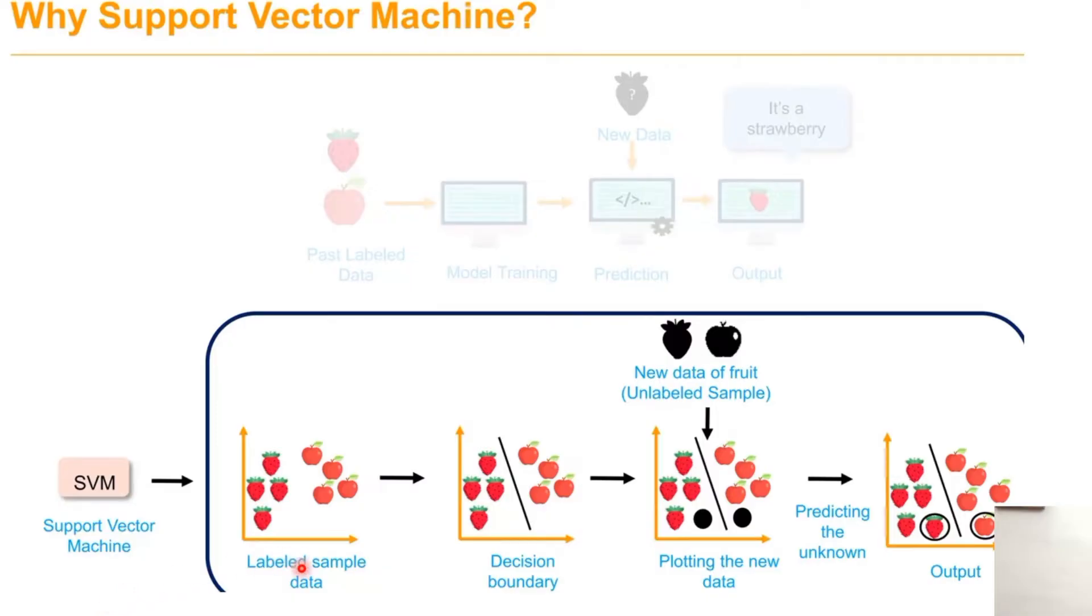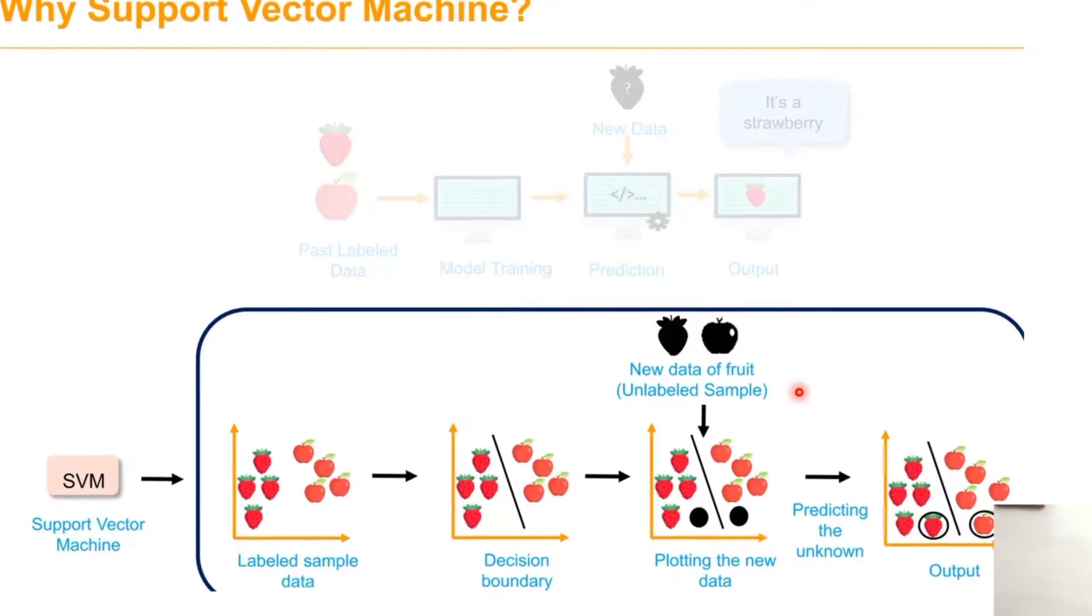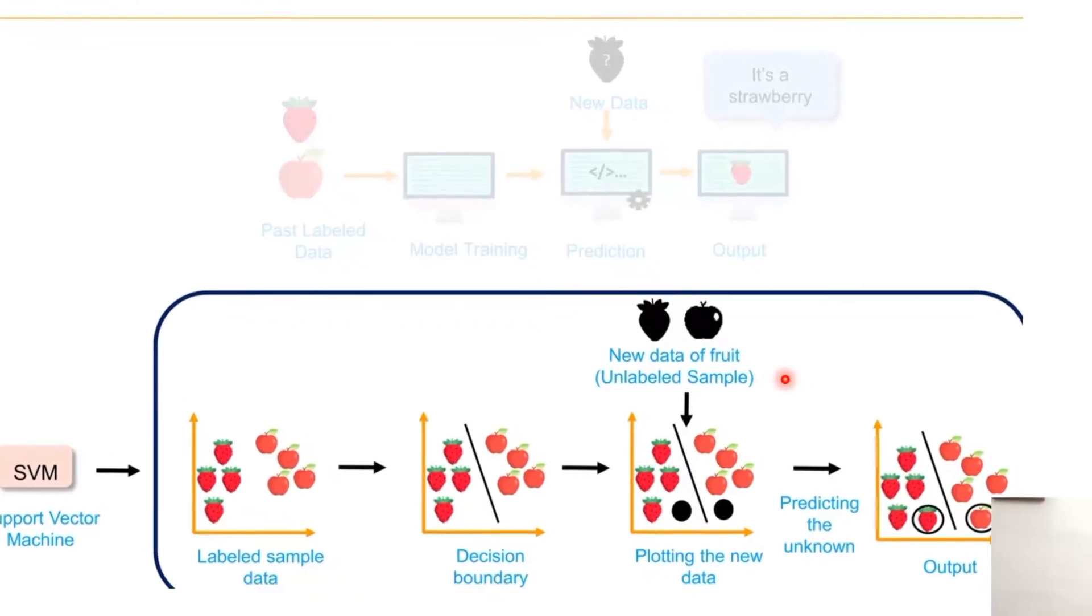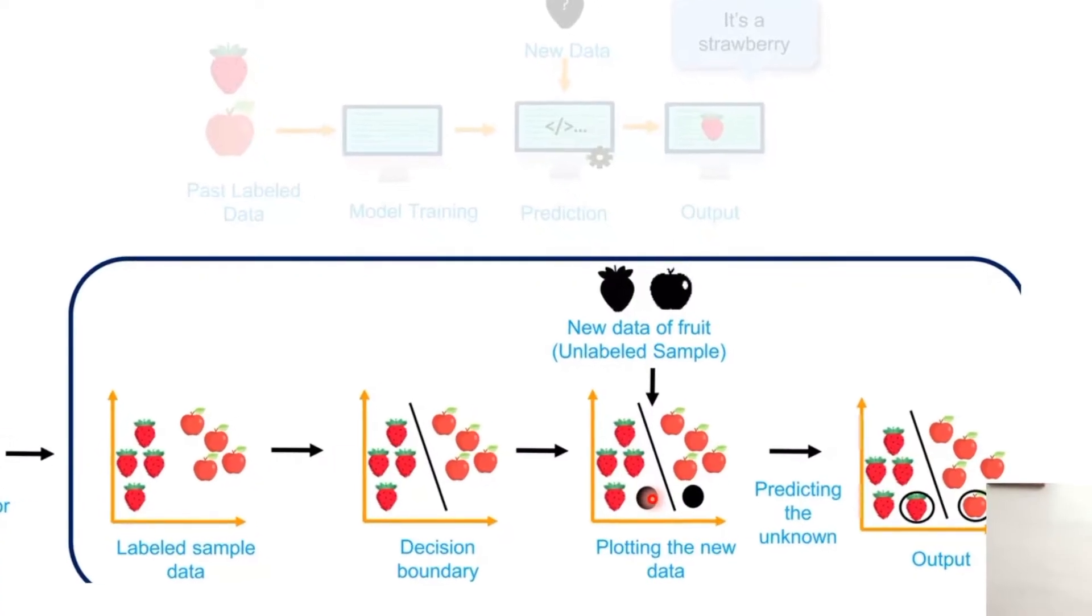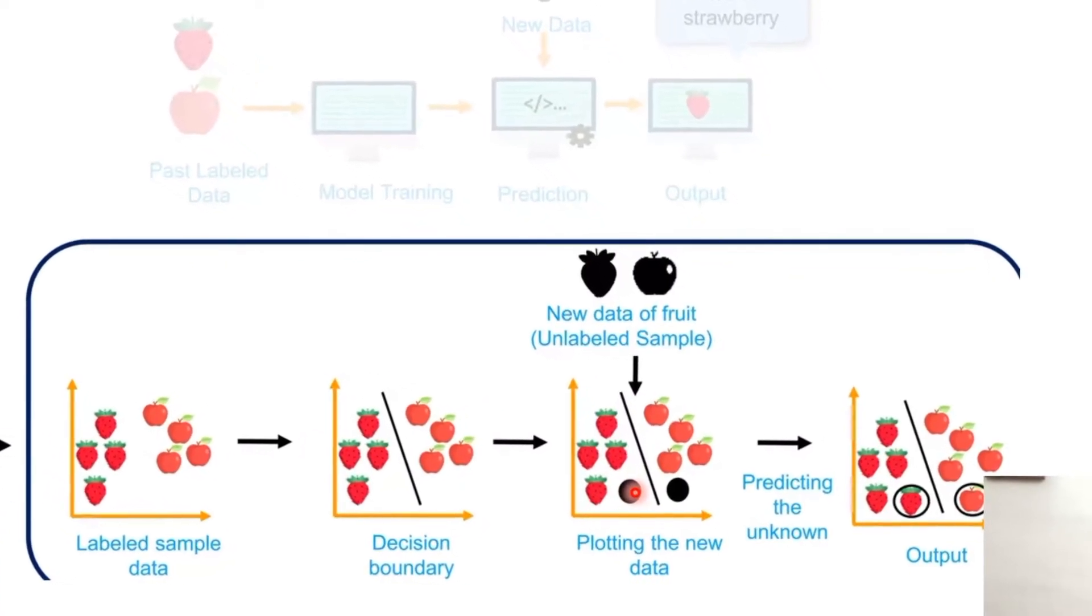After the labeled sample data is given, based on the decision boundary and maximum decision margin, it splits the data into two categories. When new data is given, based on the classification, it finds out where the data is going to belong.